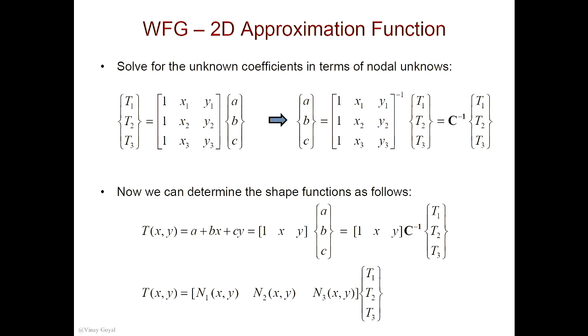Now, remember, getting the area of a triangle from coordinates is not that easy — you have to do some work. And then all these numbers are known — I know the coordinates of nodes 2 and 3. So N1 is a function of X and Y, N2 is also just a function of X and Y, and then N3 is just a function of X and Y. Everything else is numbers. It's important to understand that I have to do this for every triangle in the system — I have to calculate these shape functions for every triangle.